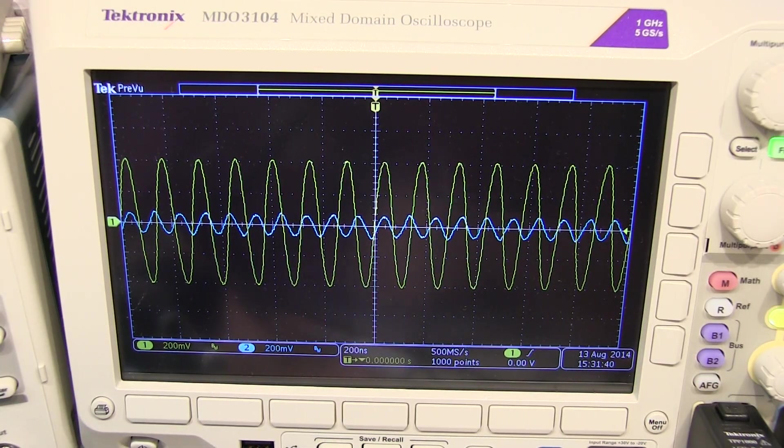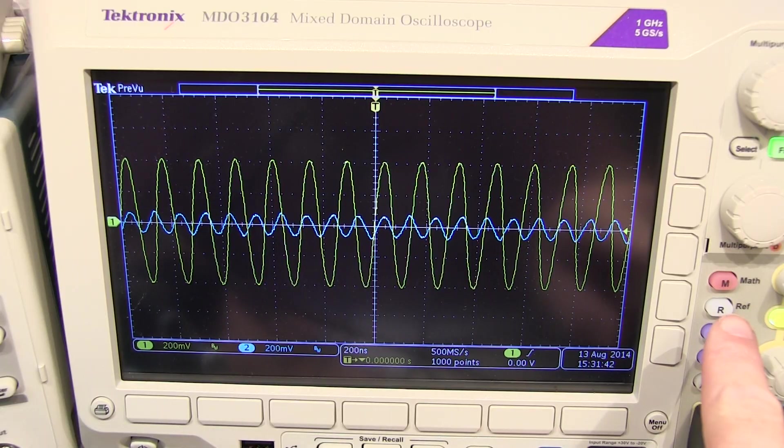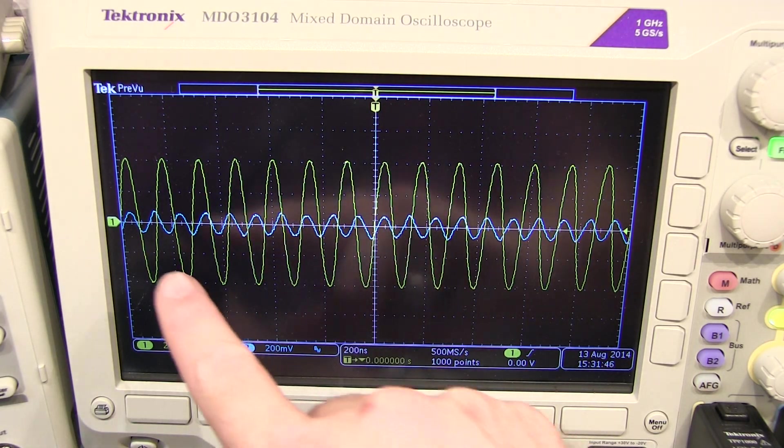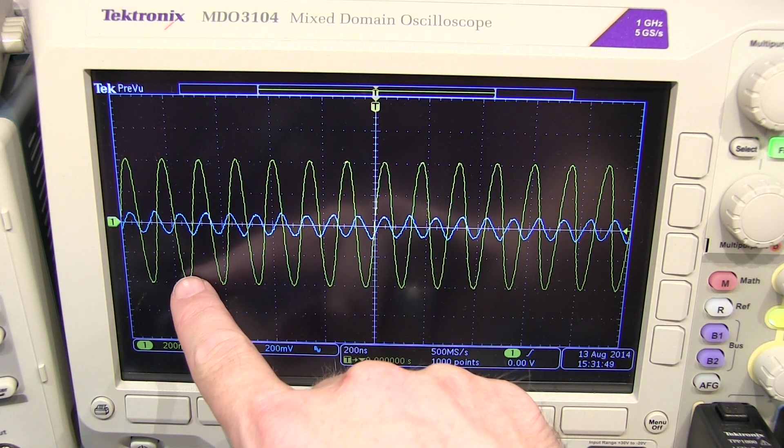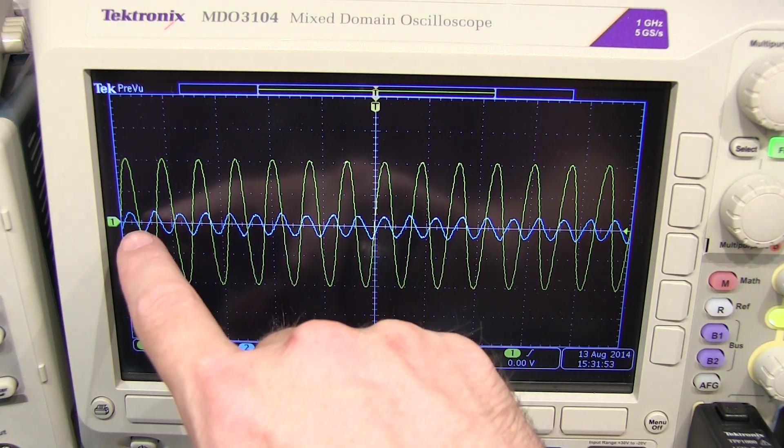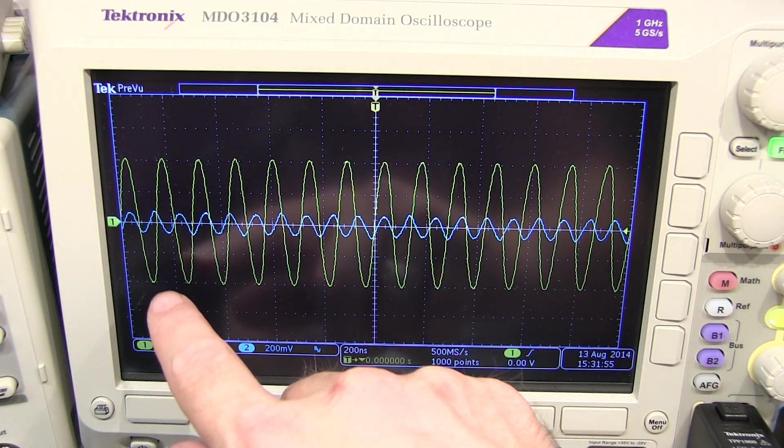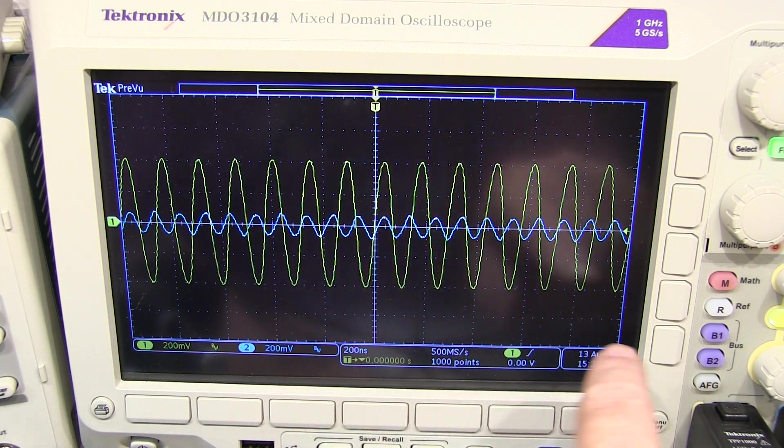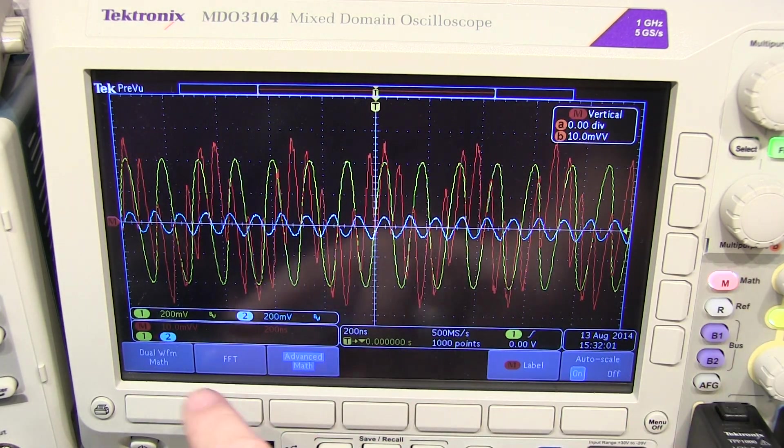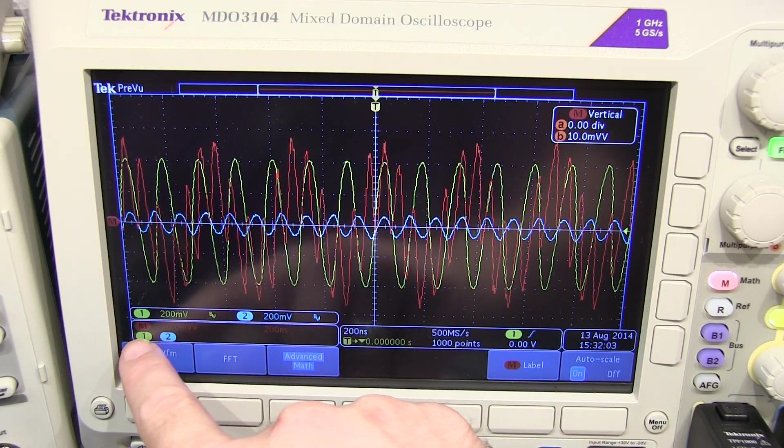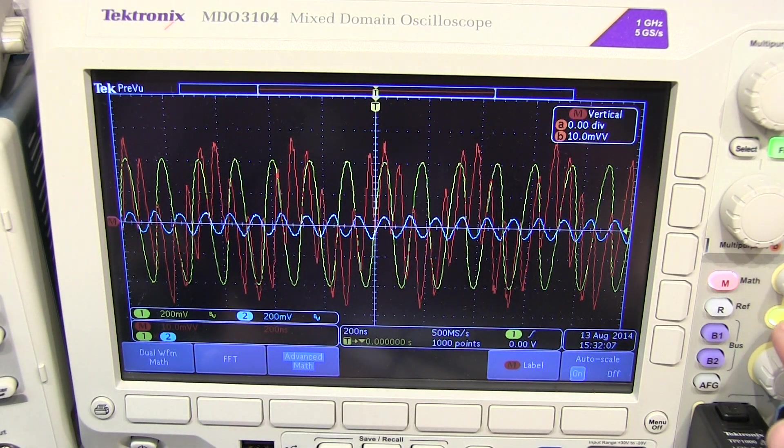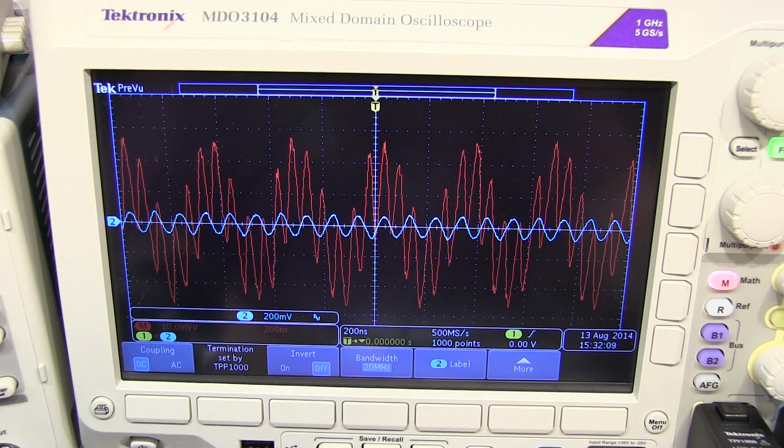And to visualize that math we simply can use the math function in the scope to multiply our two signals together. Trace number one, the yellow trace, is my 7 megahertz local oscillator frequency and the blue trace channel 2 is my 10 megahertz RF signal. And if we simply use the math function I've already kind of set it up to multiply channel 1 by channel 2. That shows up as the red trace here. And let me turn off the other traces so it'll be easier to see.